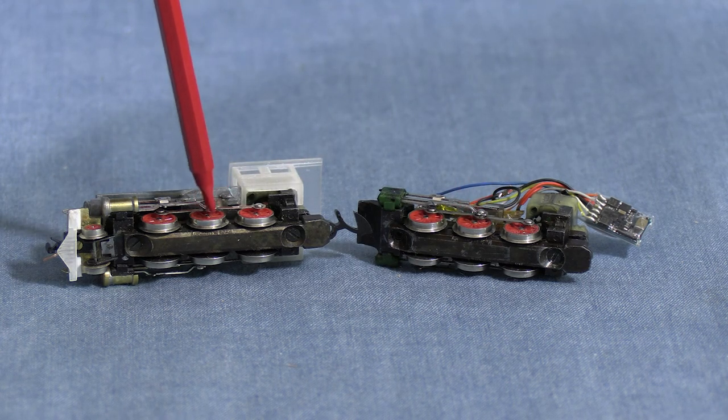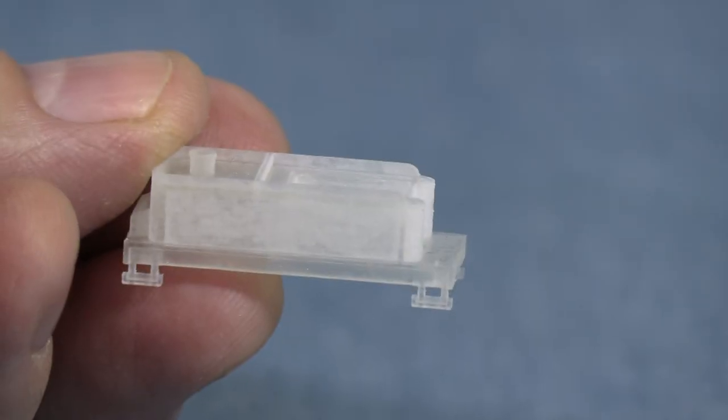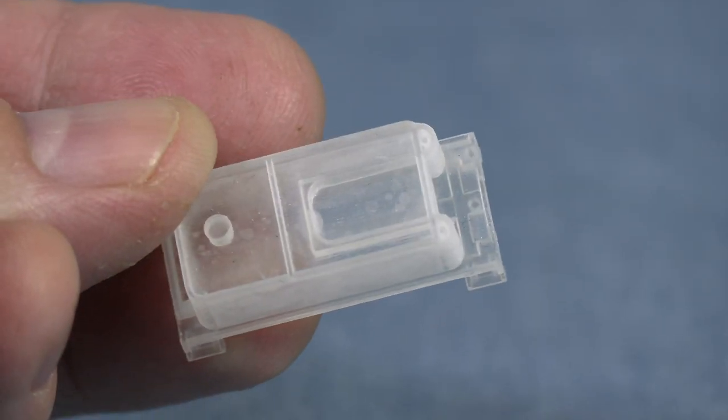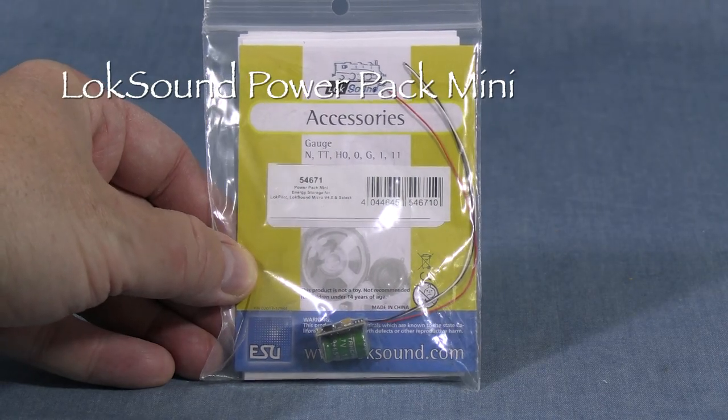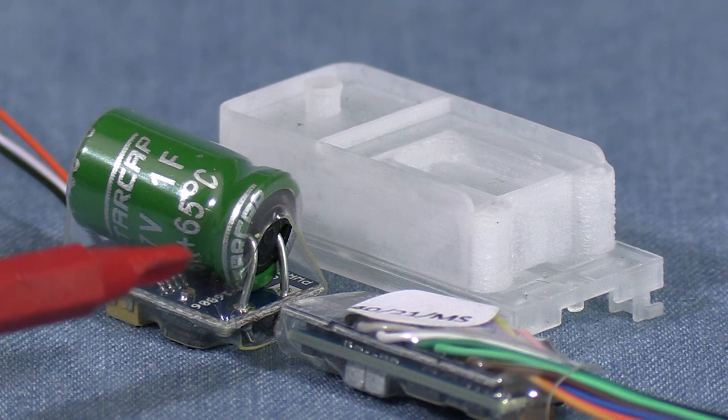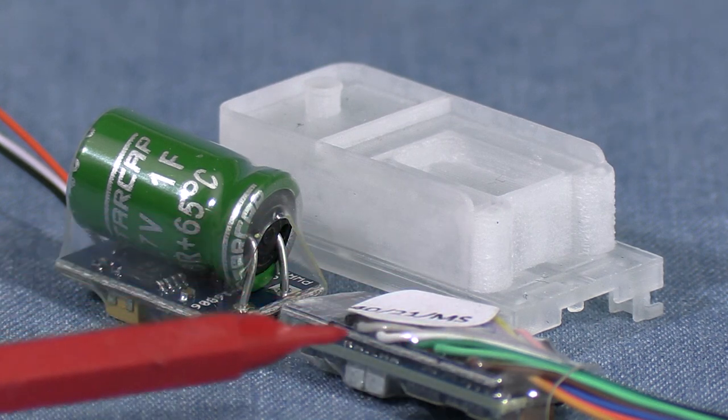I have two of these mechanisms, and they're both like that, so I don't think it's a defect. I'm not sure why they did that, but it means that the engine is really only getting power from four wheels. I could put some wipers on the tender wheels to improve that, but I still think it may end up stalling a lot. One solution is to add a Loksound PowerPak Mini.